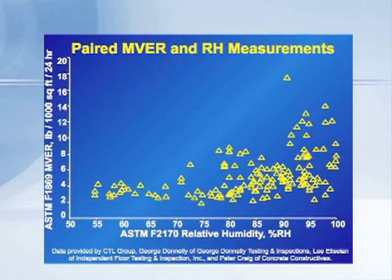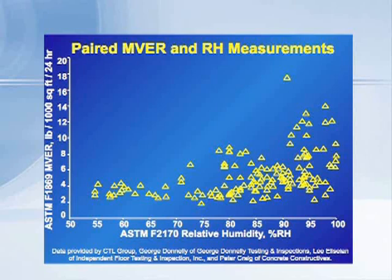On this next slide, we'll take a look at the relationship between the calcium chloride kits and the internal relative humidity measured with probes in the concrete. I'm often asked the question: what is the relationship? Does three pounds measured at the surface of the concrete equal a certain percentage of humidity down in the concrete? Well, this graph is based on about 100 different paired measurements where calcium chloride kits were put on the surface of concrete and a humidity probe was drilled into the concrete right next to it. Several colleagues of mine around the country and our organization made these measurements, and what we've done is to plot them here.